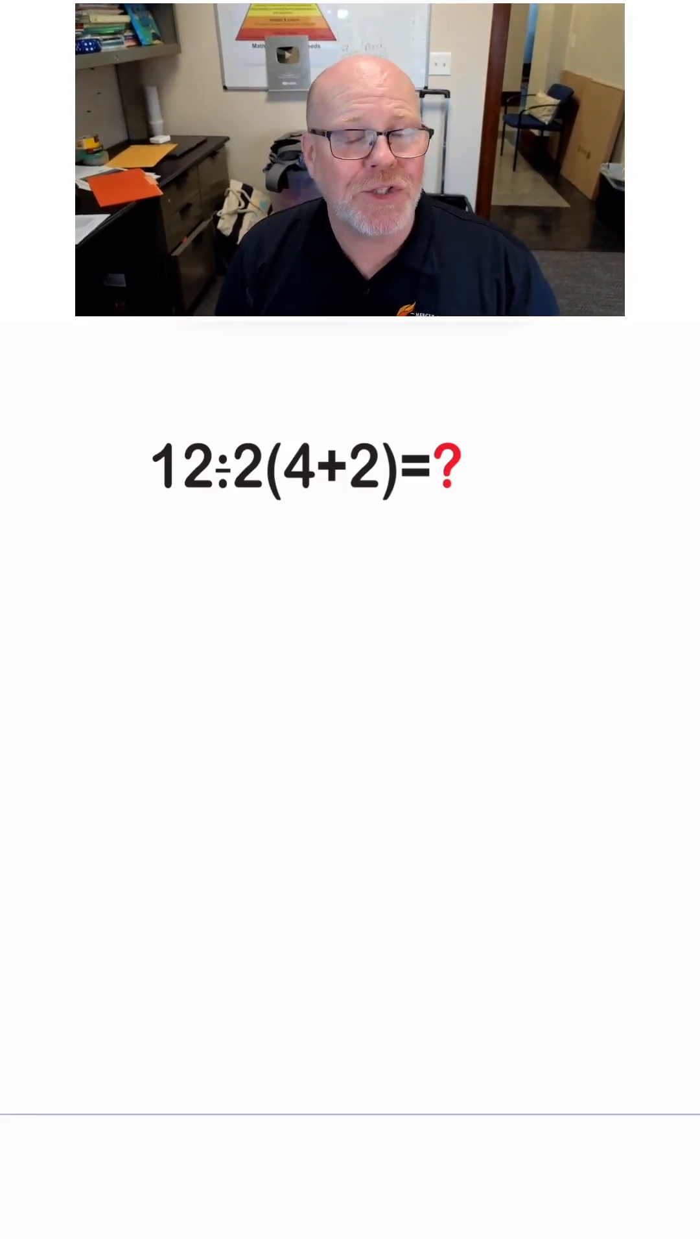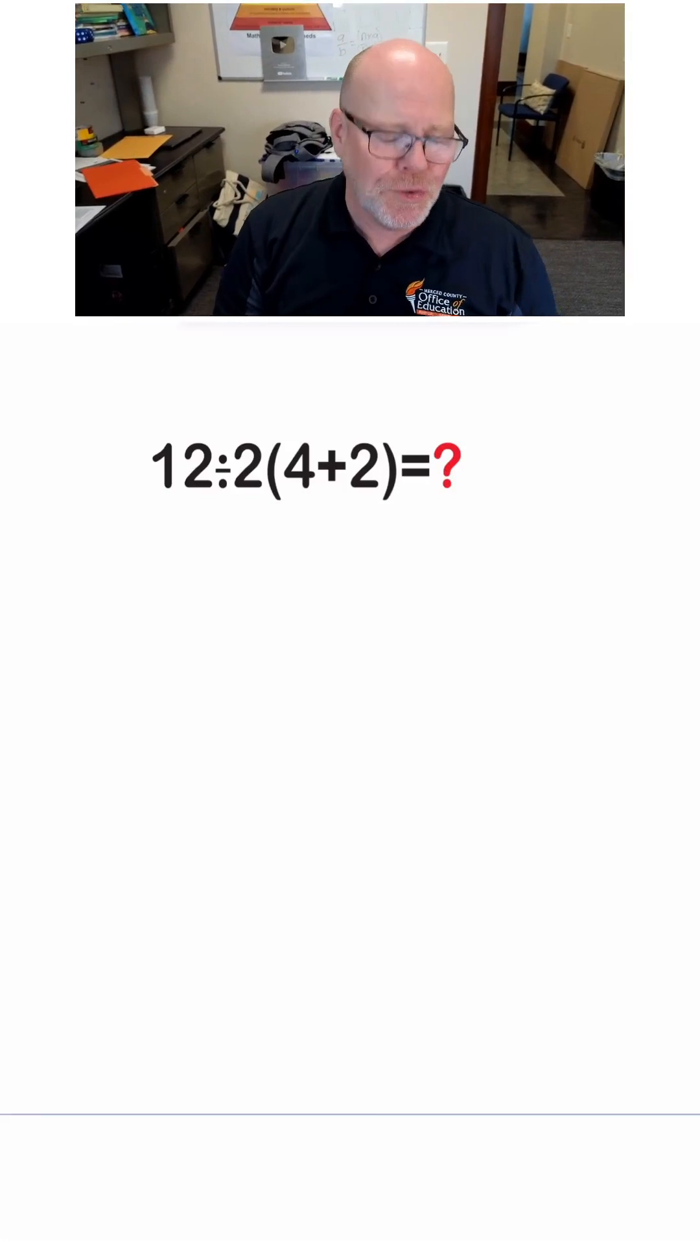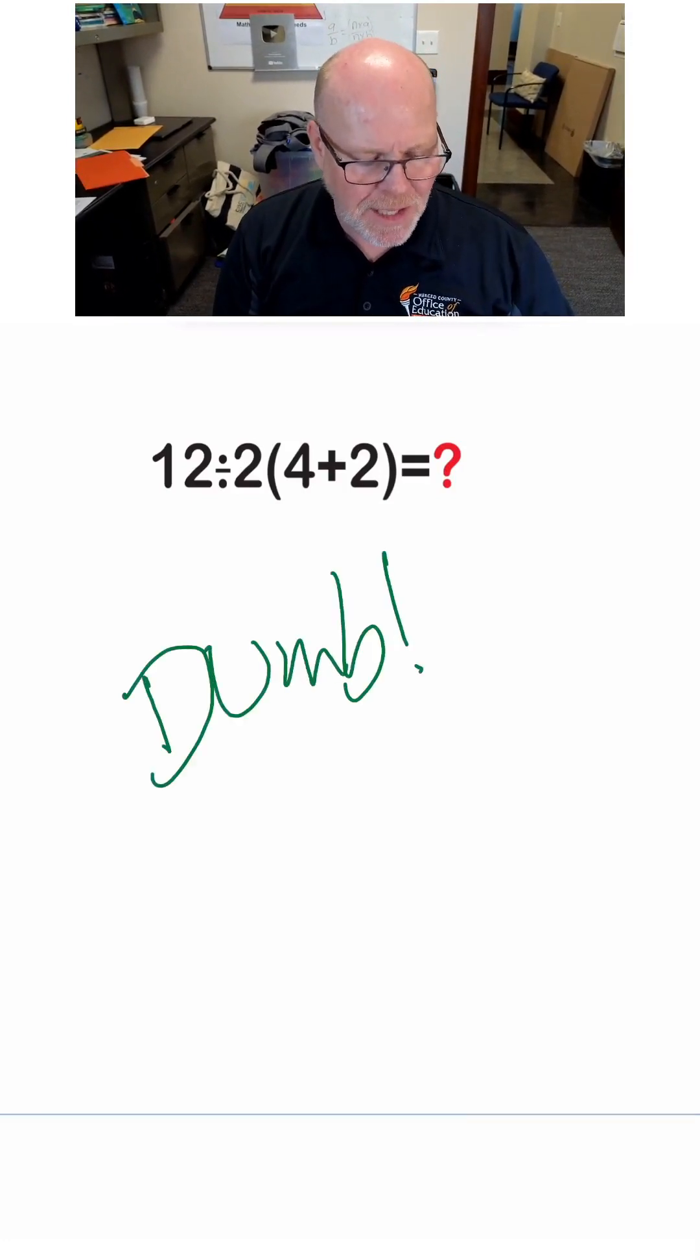What is 12 divided by 2 times the quantity 4 plus 2? It's dumb. That's what it is. It's just plain old dumb.